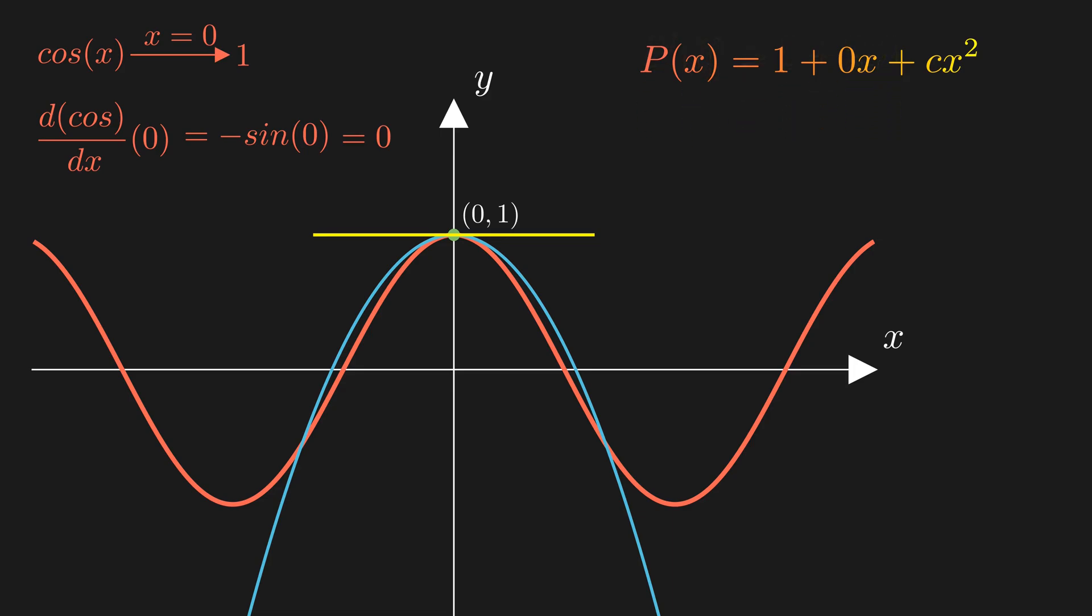Now we've matched both the position and the slope. But we can still create infinitely many such polynomials by just changing the c. Still, by fixing a and b as we did, we've locked the polynomial onto the point 0, 1 with a flat slope. You can probably see where this is going. If matching the first derivative made the polynomial more accurate, then matching the second derivative should make it even better, right?